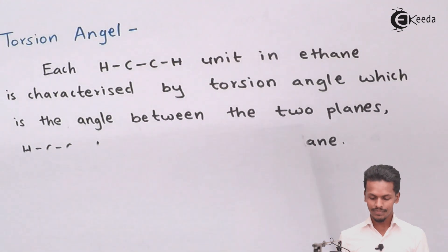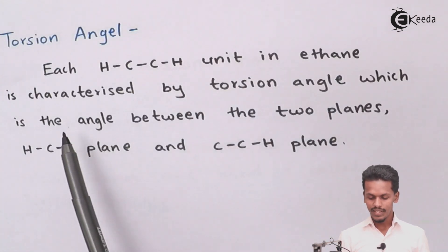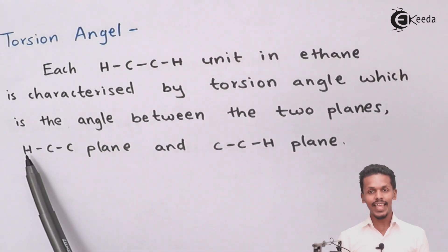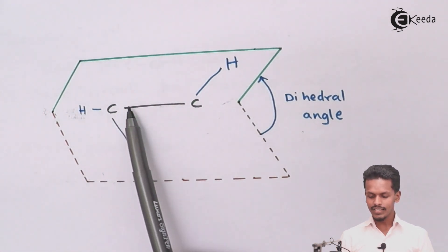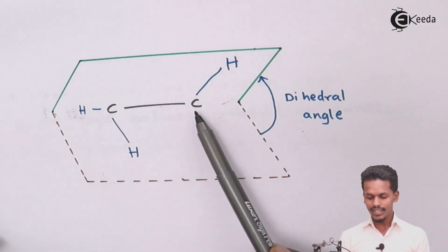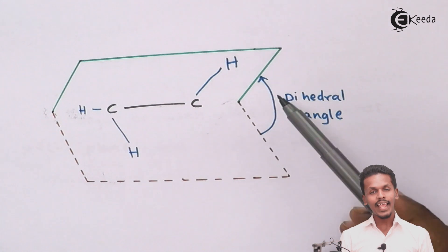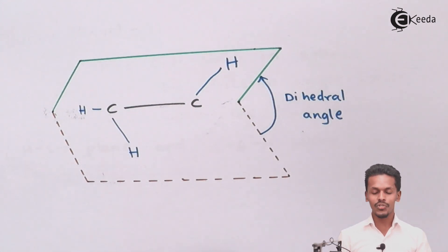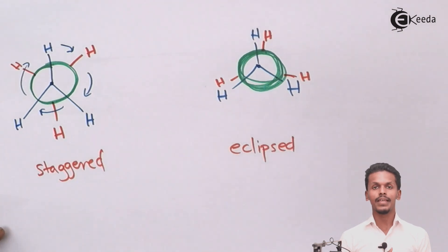This can be shown in a diagram. As you can see, the torsional angle is the angle between the plane containing HCC and the plane containing CCH. These are two different planes, and the angle between them is known as the dihedral angle or torsional angle. This is easy to see in the Sawhorse formula as well.